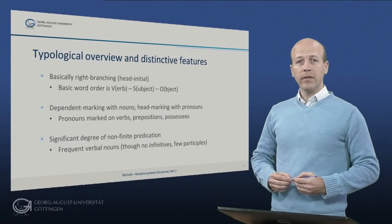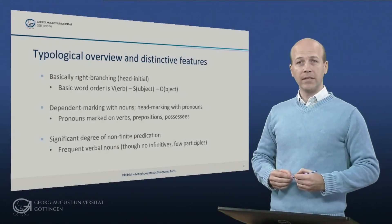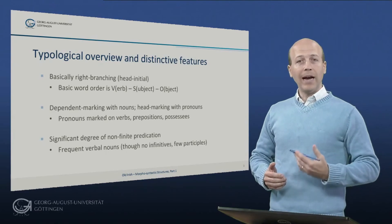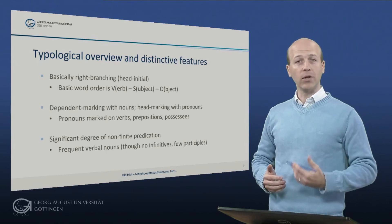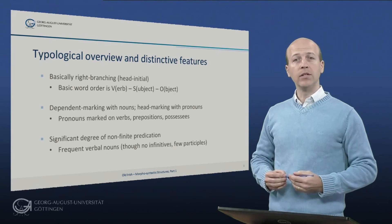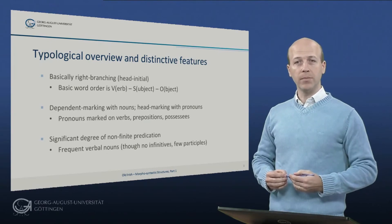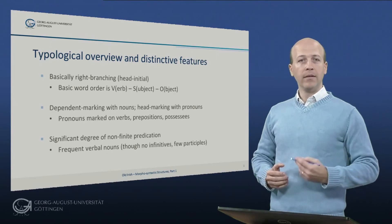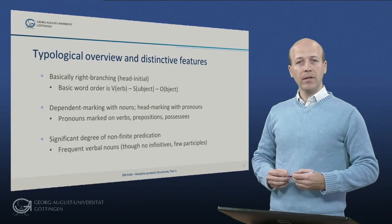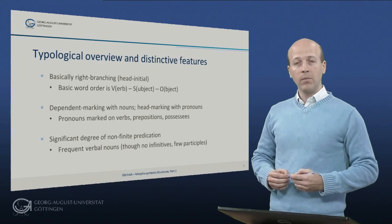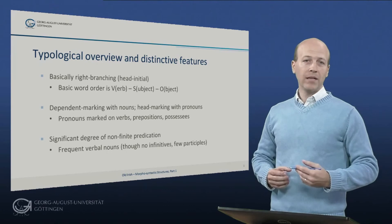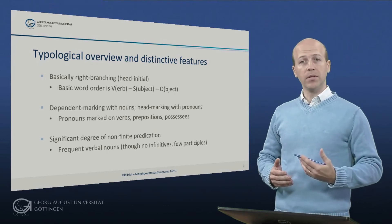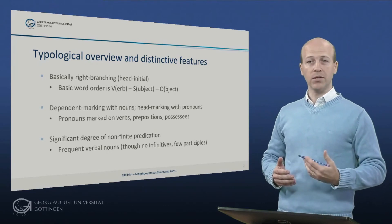To start with the typological overview with distinctive features. Basically, Irish is right-branching — that is, it's a head-initial language. The basic word order is verb, subject, object. Dependent marking is on nouns, while head marking is with pronouns. What that means is pronouns are marked on verbs, prepositions, and possessives.